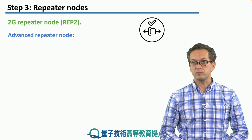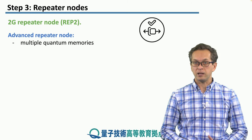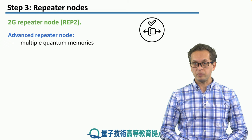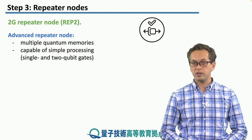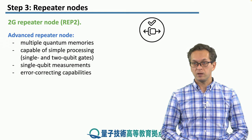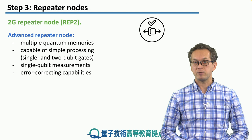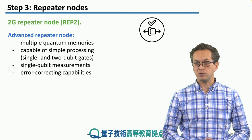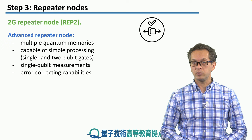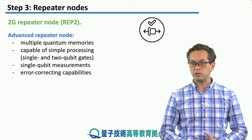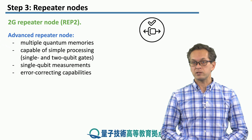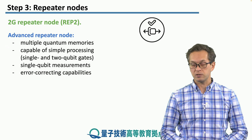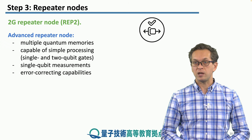The 2G repeater node is more advanced than the 1G repeater node, but again it is equipped with multiple quantum memories. It can perform simple processing such as single qubit gates and two qubit gates and do single qubit measurements. The crucial difference is that it is capable of error correction — it can encode the physical state of the qubit and its logical information into a logical code comprised of many physical qubits and run syndrome measurements and recovery operations.